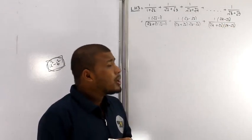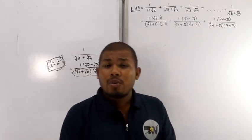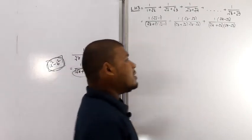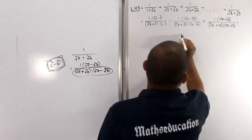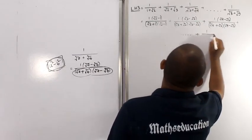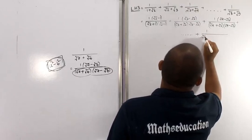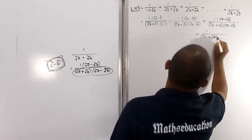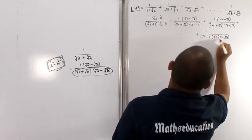The numerator is the conjugate quantity. For the last step, 1 divided by root over 8 plus root over 9, multiply by root over 9 minus root over 8 over root over 9 minus root over 8.